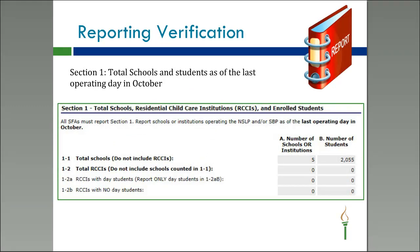In the first section, you will report the total number of schools and the total number of students enrolled as of the last operating day in October. In Column A, you'll report the number of schools, and in Column B, you'll report the number of students. It also asks about any residential child care institutions, or RCCIs.